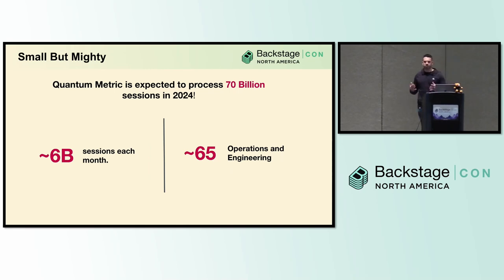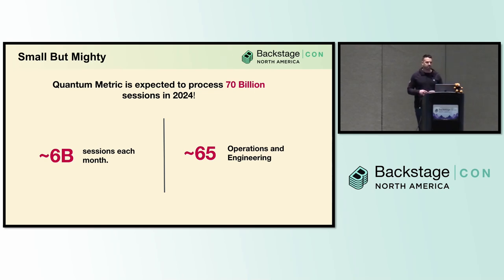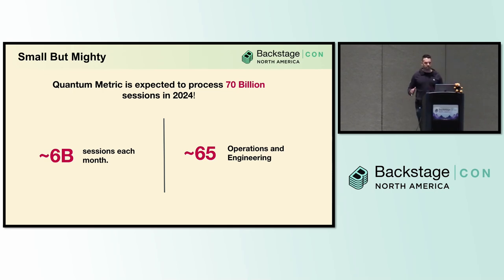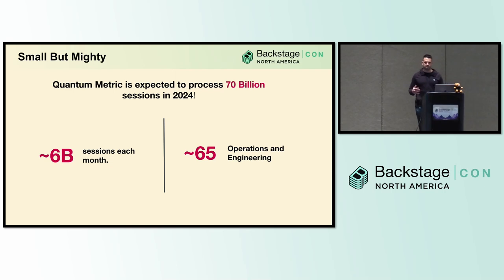Capturing real-time events, errors, and customer behaviors means collecting a lot of data. This year we're tracking to ingest just around 70 billion sessions, and we do this with just around 65 people across engineering and operations. So staying lean and prioritizing efficiency is really important to the company regardless of how we're scaling.